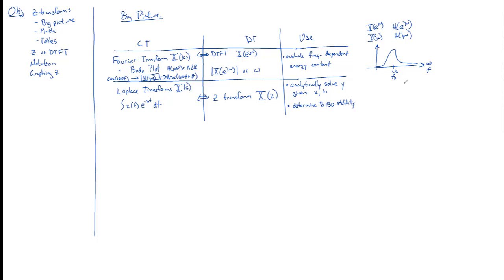So you'll remember for the continuous time case that you could graph the S-plane over here. And any non-real poles or zeros had to appear in complex conjugates. And just by looking at it, can anyone tell me, Noah, can you tell me if this is BIBO stable or not BIBO stable?